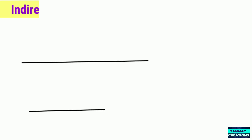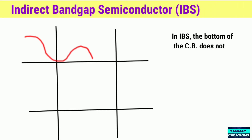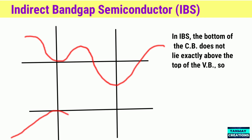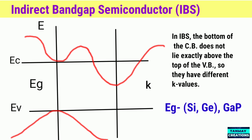Let us now talk about indirect band gap semiconductors. In an indirect band gap semiconductor, the bottom of the conduction band does not lie exactly above the top of the valence band, so they have different K values — delta K is not zero. Examples of indirect band gap semiconductors are silicon, germanium, and gallium phosphide.